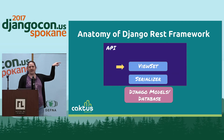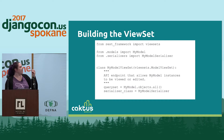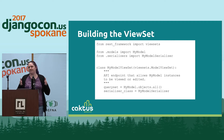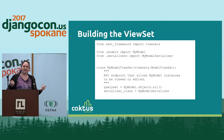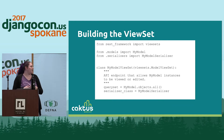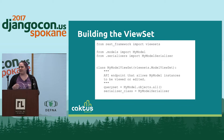Now let's move up a step to the viewset. We're going to import the viewset, import our model again, and import that serializer we just created. Then we subclass the ModelViewSet from Django REST Framework. We tell it what our queryset is — in this case just using all of the objects for the model, though you could use different view sets for different subsets of your data. And then you tell it what serializer class to use.